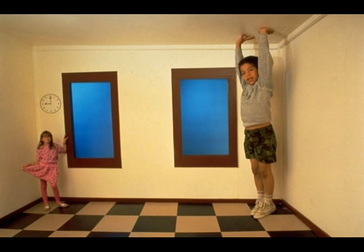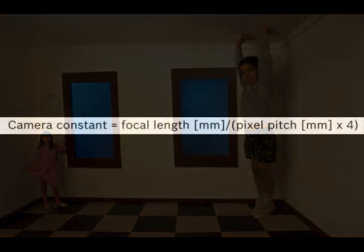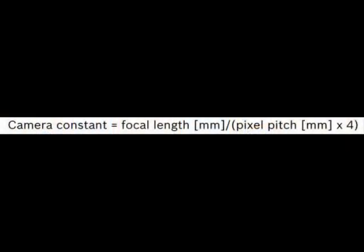Here you will see two children who are the exact same height, but because of the anomaly of the room that they are in, one looks smaller and one looks larger. To calculate Camera Constant, the equation is: Camera Constant equals focal length of your lens in millimeters, divided by pixel pitch in millimeters, times 4.